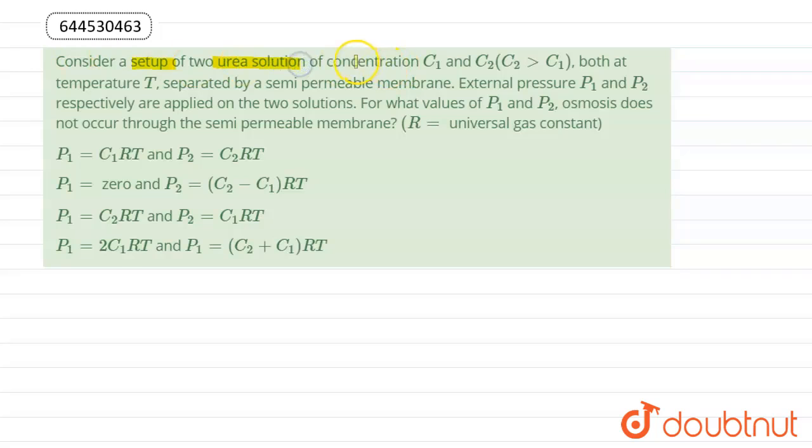a setup of two aqueous solutions of concentration C1 and C2, both at temperature T, separated by a semi-permeable membrane. External pressures P1 and P2 respectively are applied on the two solutions. For what values of P1 and P2 does osmosis not occur through the semi-permeable membrane? R is the universal gas constant.